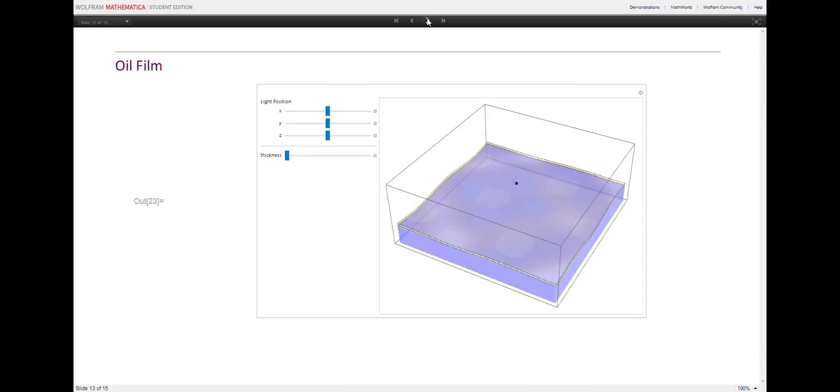In reality, the surface of a puddle really isn't completely flat. This interactive graphic shows thin film interference off oil on rippling water. Again, if we increase the thickness of the oil film, there is a wider range of colors. We can also change the X, Y, and Z positions of the light and see how the iridescence pattern changes.